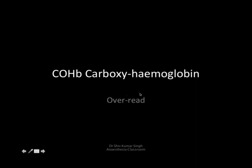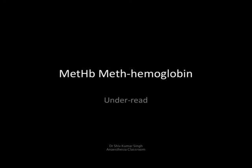Carboxyhemoglobin over-reads because its absorption is in the oxygenated hemoglobin range, maximally at 660 nanometers. With methemoglobin, it depends on the level: if methemoglobin levels are low, the oximeter tends to read 85%, meaning it under-reads when the true saturation may be around 93–94%. If methemoglobin levels are very high, the oximeter will read approximately 85% even when the true saturation may be around 80–83%, because the AC and DC component absorptions at 660 and 940 nanometers are equal with methemoglobin — so it tends to over-read at high methemoglobin levels.